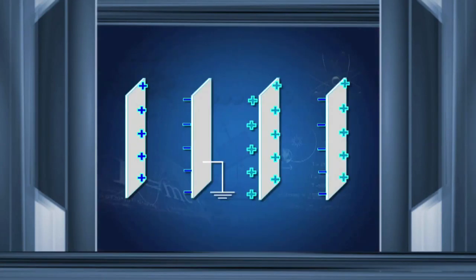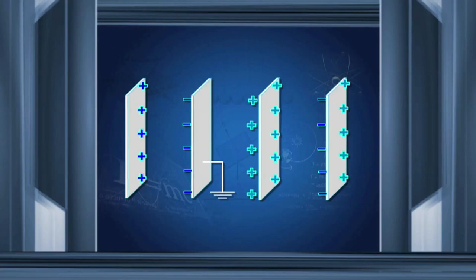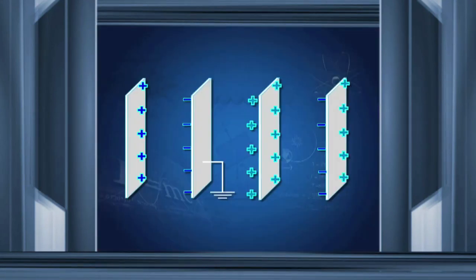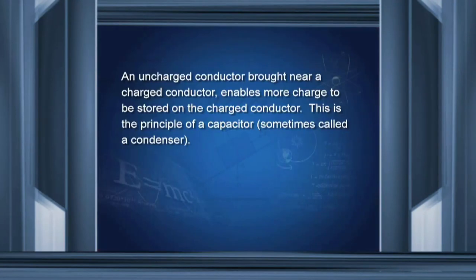Because of the negative charge and the attraction between these two kinds of charges, the potential of the first sheet is slightly reduced. That means we can push more charge onto it. We have therefore increased the capacity of this plate to hold more charge. A non-charged conductor brought near a charged conductor enables more charge to be stored on the charged conductor. This is the principle of a capacitor, sometimes called a condenser.